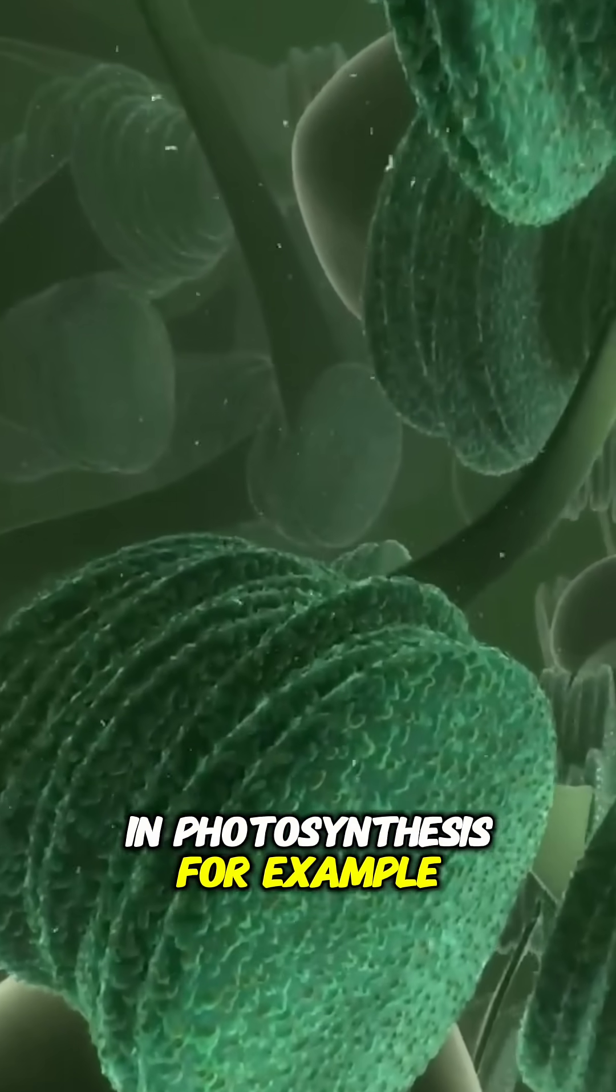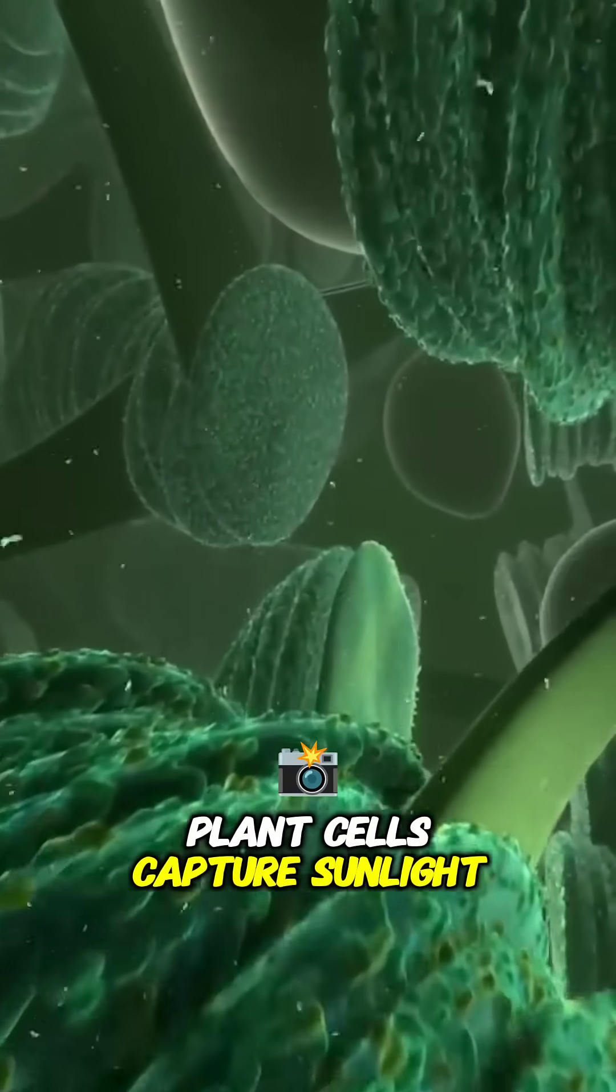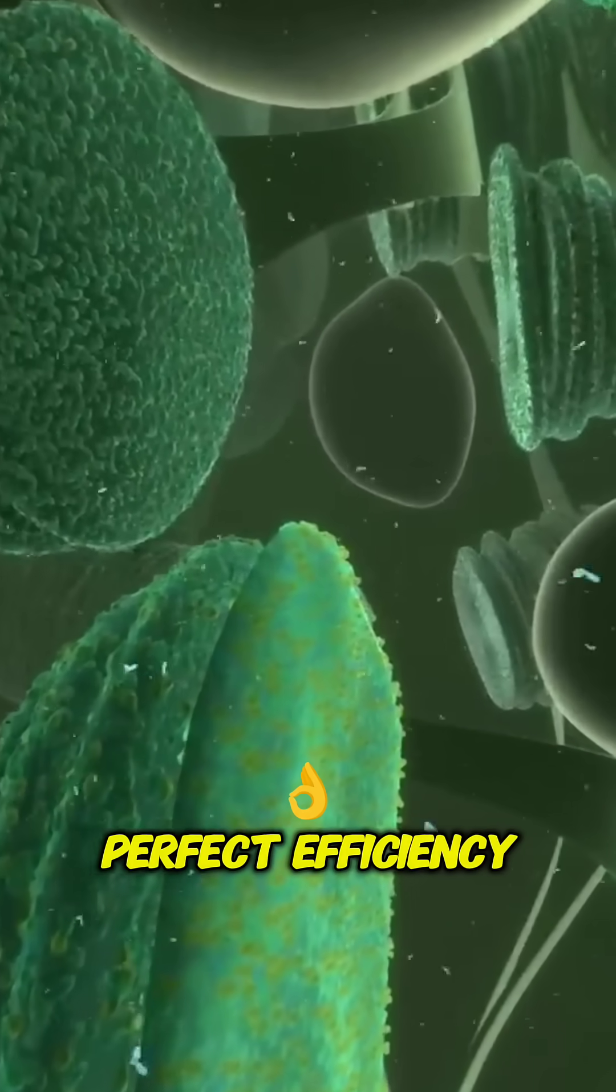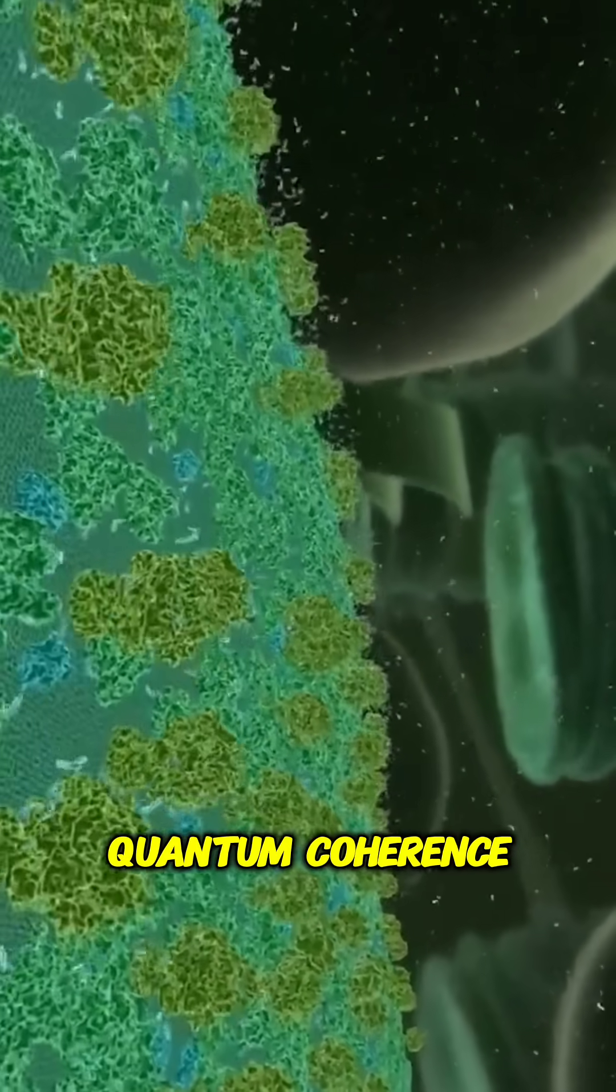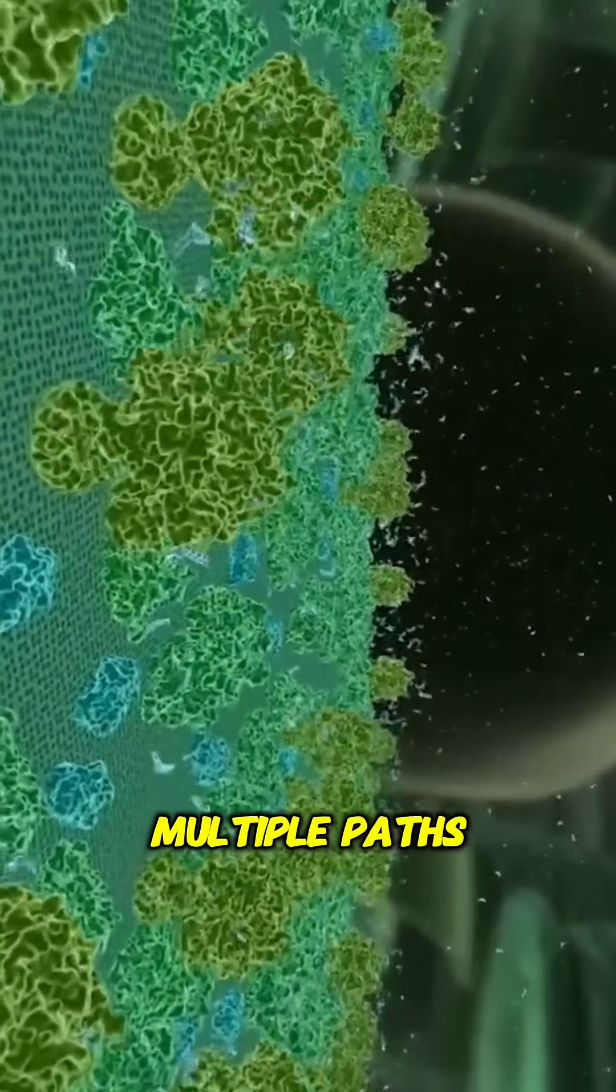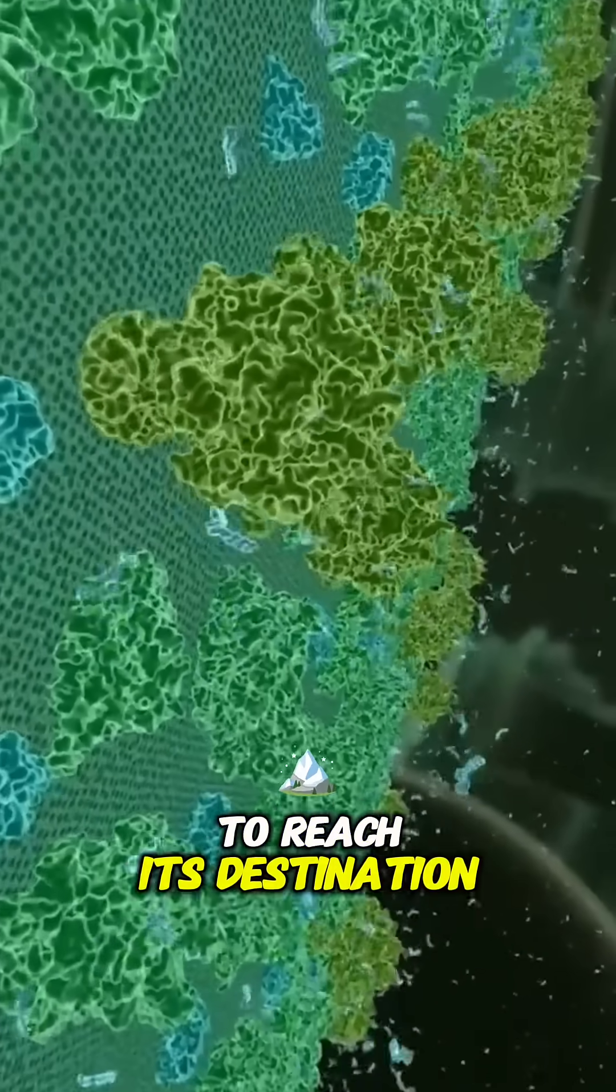In photosynthesis, for example, plant cells capture sunlight, transferring energy with near-perfect efficiency. This feat scientists believe may be achieved through quantum coherence, allowing energy to take multiple paths simultaneously to reach its destination.